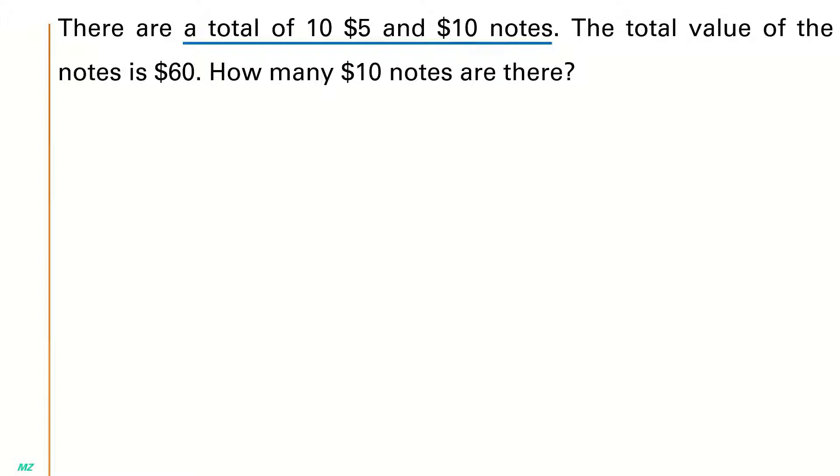Next, let's underline the key phrases for this question. The first key phrase is that there are a total of 10, $5 and $10 notes, and the total value is $60. We need to find the number of $10 notes, so we're going to use the guess and check method.